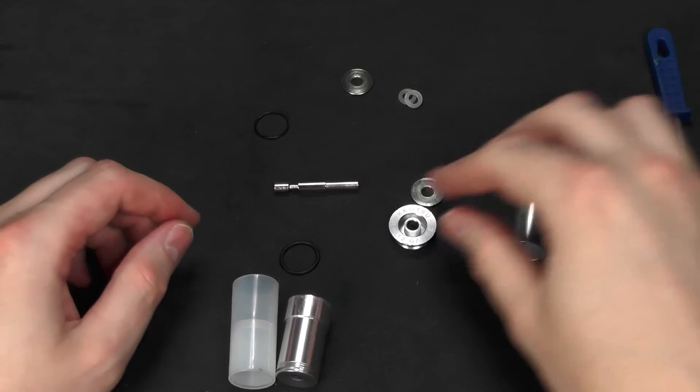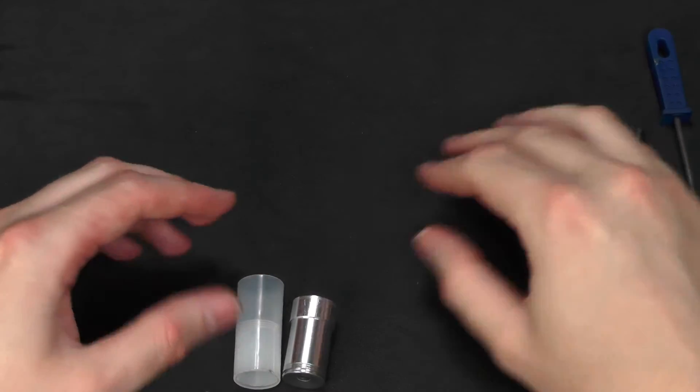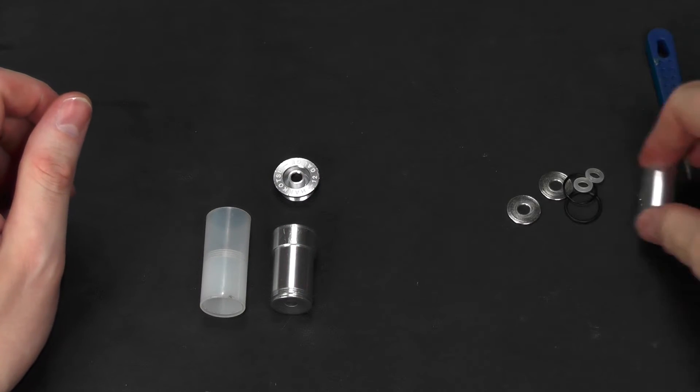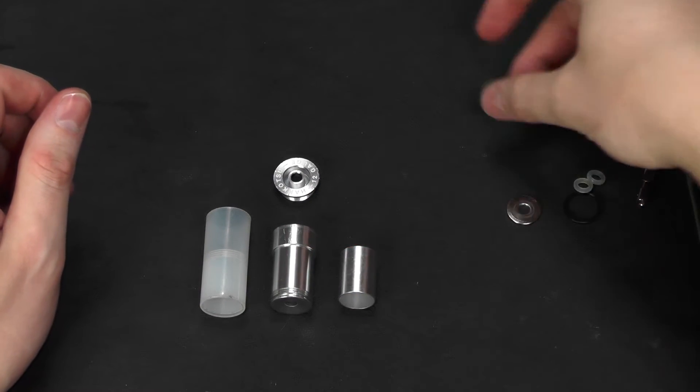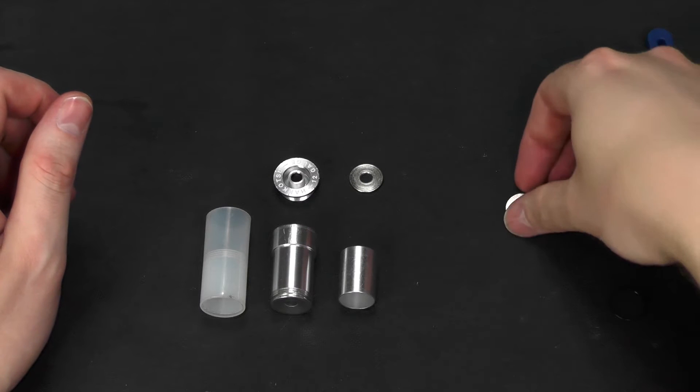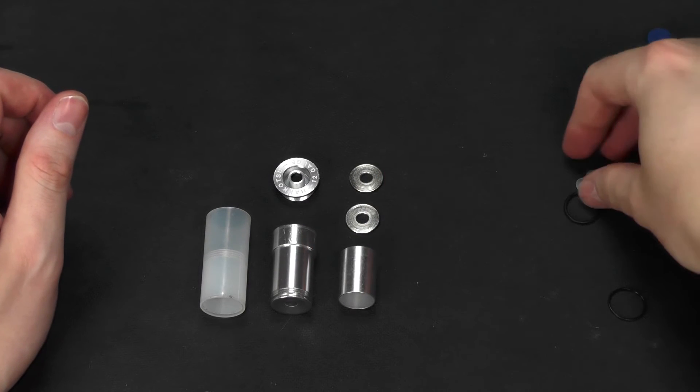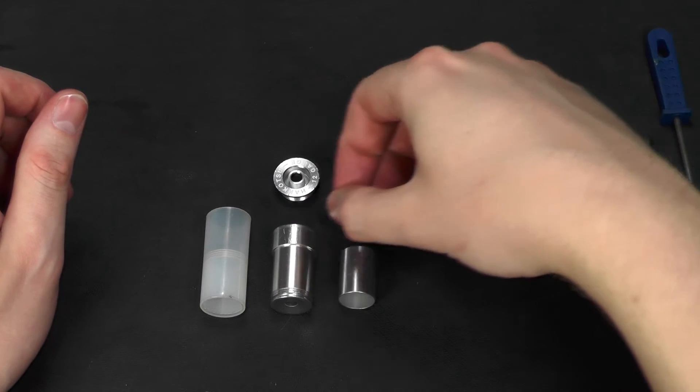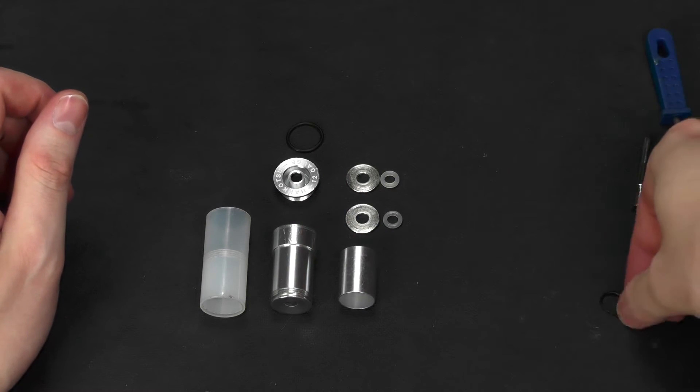So here we go, the shell disassembled. Let me line all of this up. We have the plastic body, your metal body, rim, spacing sleeve, top washer, bottom washer, top o-ring, bottom o-ring, and then we have two—I'm sorry, one o-ring on the rim and one on the metal shell, and we have the valve stem as well.